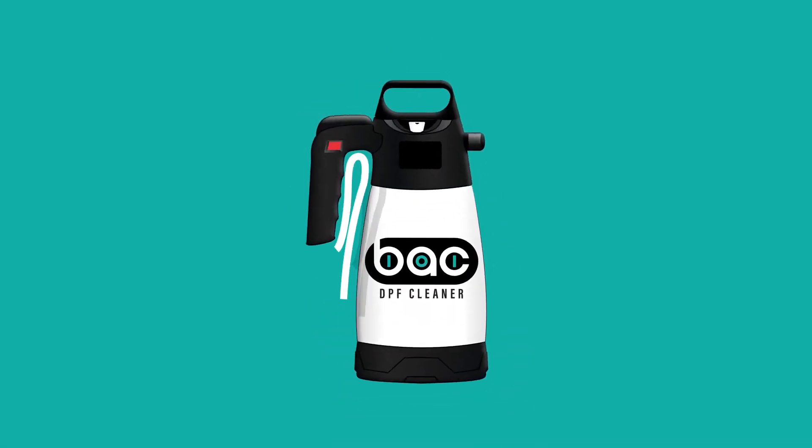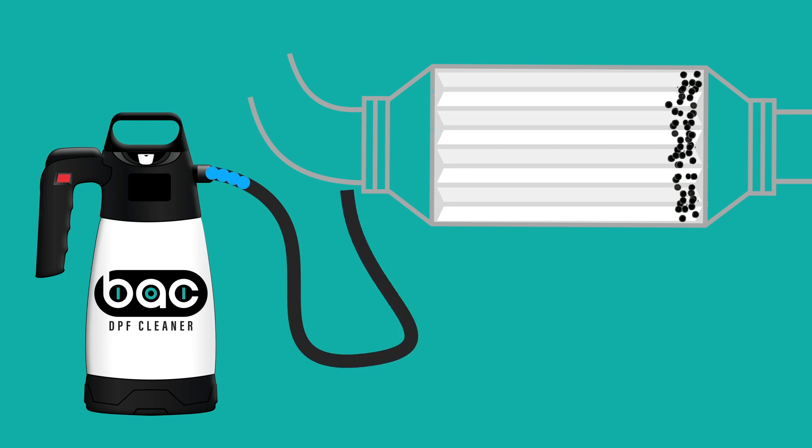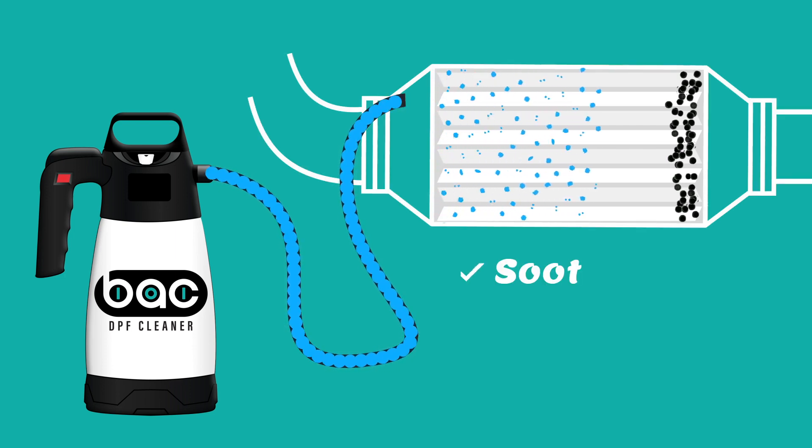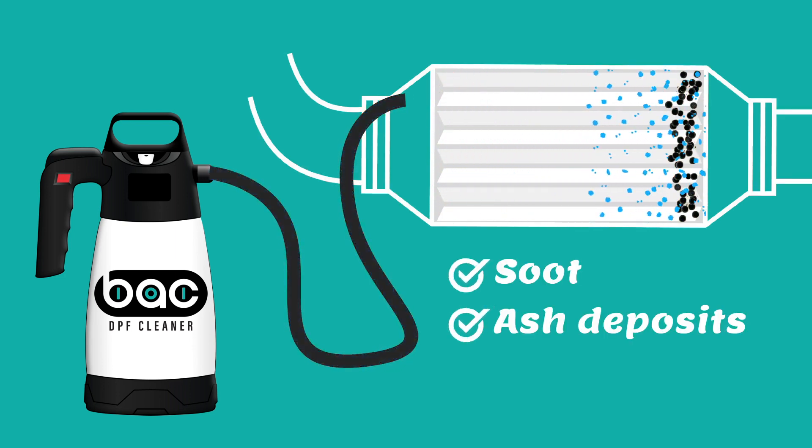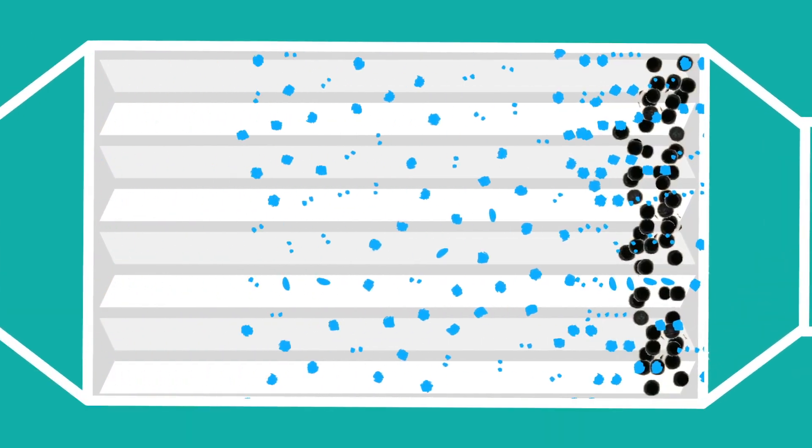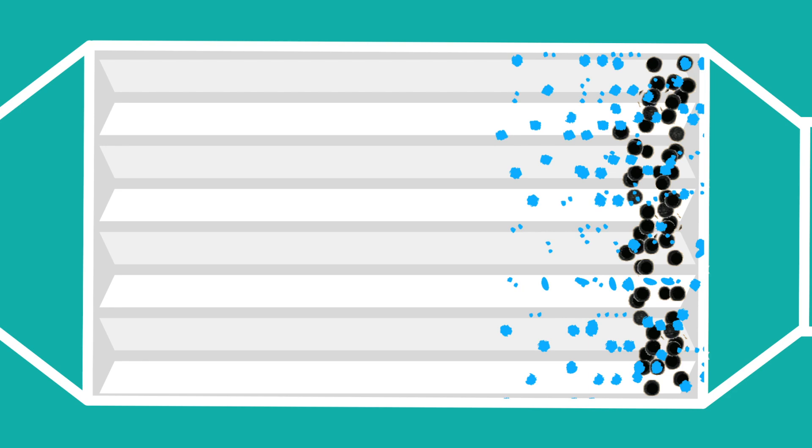BAC 101 is the first two-part system offering a total cleaning solution that not only removes the soot and ash deposits, but also cleans the oil residue within the DPF system, effectively taking the cleaning process to a whole new level.